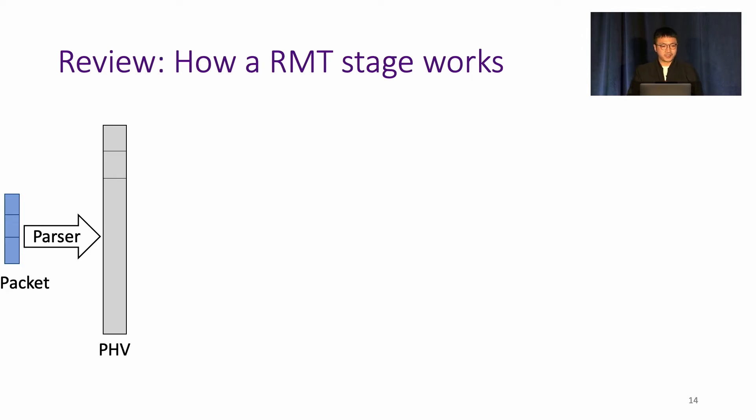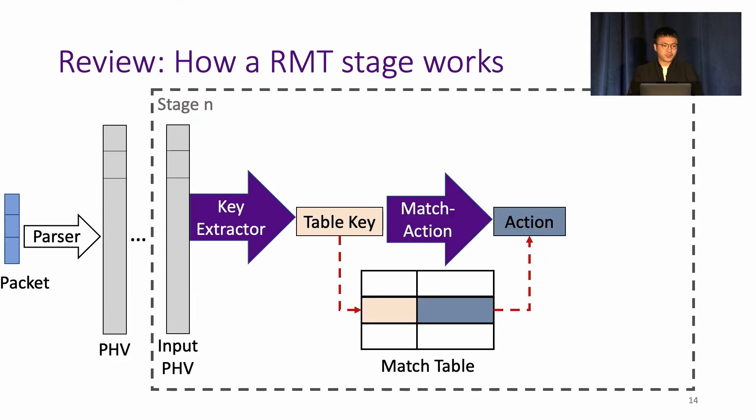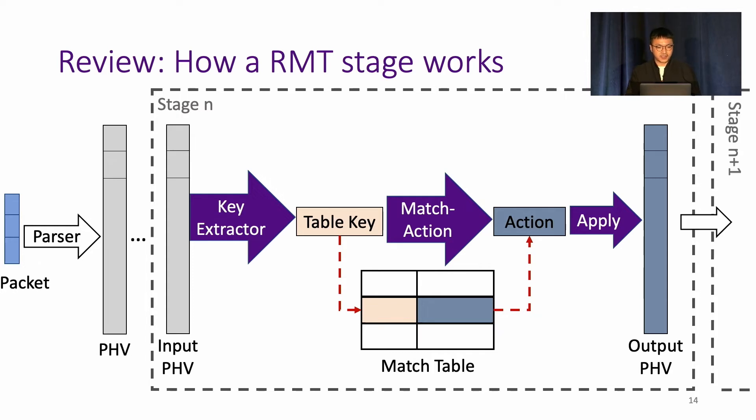Before going into the details of Menshen, let's review how an RMT stage works. First, through a programmable parser, the packet header portion is parsed and stored in the PHV. The PHV is essentially the containers for the packet header fields that will be used or modified through the pipeline. Then at one stage, the PHV will serve as input and through a key extractor, it will construct a table key, which will be then used to match against the match table to get the action. Then the action will be carried out on the PHV, and the newly modified PHV will be output to the next stage for processing.